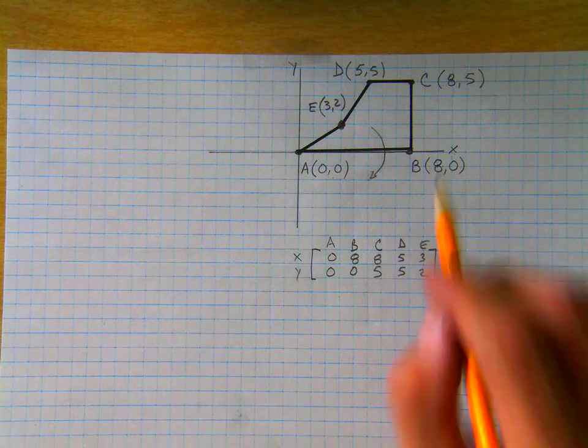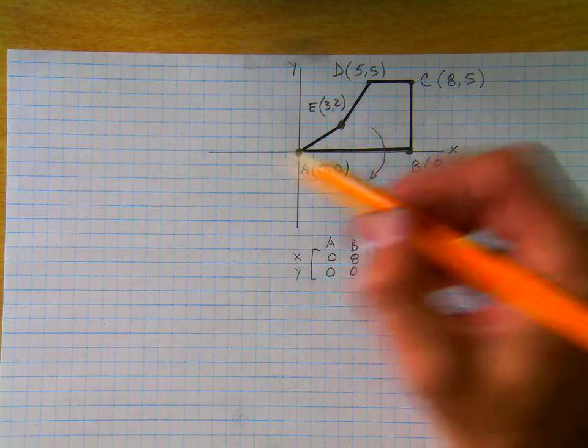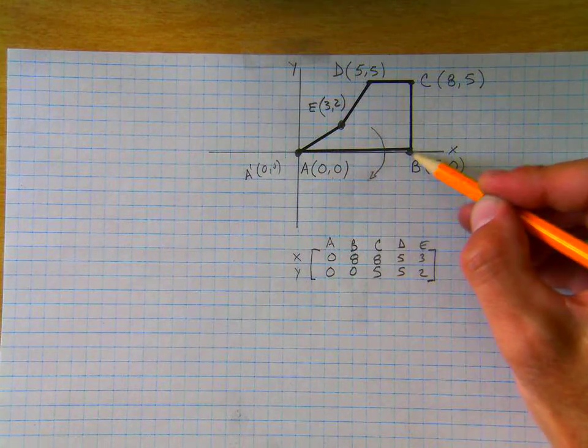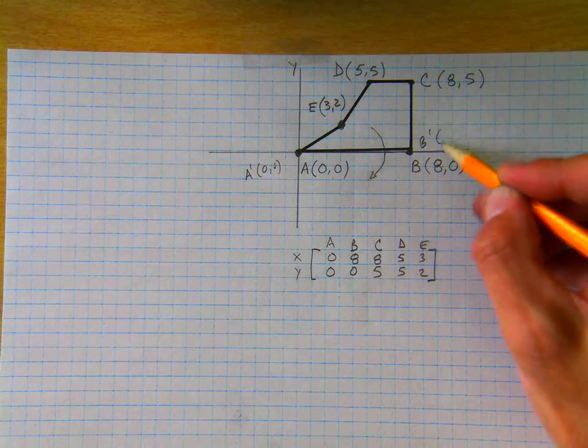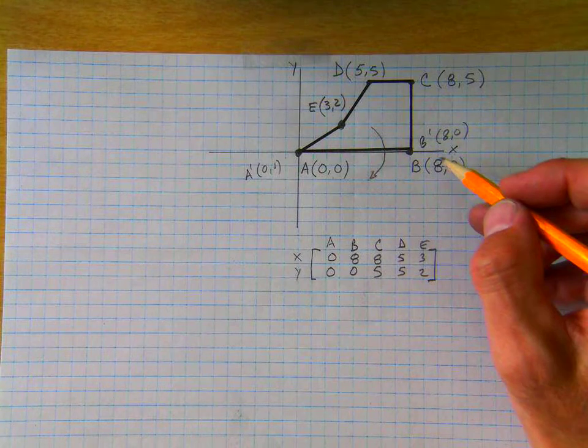If we do that, some of these points remain in the same spot. Point A stays in the same spot, so A prime is 0, 0. Point B stays in the same spot, so B prime is 8, 0. And that's because those points are on the line of reflection.